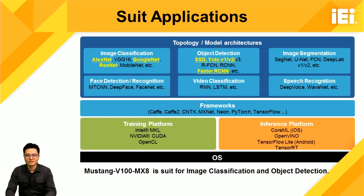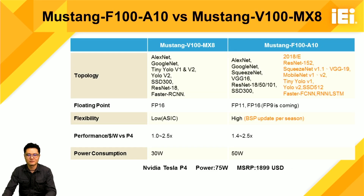The Mustang V100MX8 supports topologies such as AlexNet and GoogleNet, ideal for image classification, and SSD and YOLO, suitable for object detection applications. Here is a comparison table of FPGA and VPU inference cards to help users choose the ideal card for their applications. VPU is an ASIC, so it has less flexibility compared to FPGA, but with extremely low power consumption and high performance, it is very suitable for edge device inference systems.